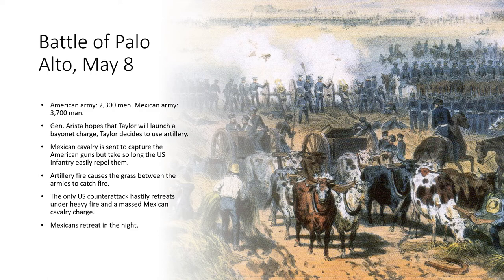The fire was so intense that the grass between the two armies caught fire. Only once during the battle did the U.S. regulars launch their own attack, but a combination of massed cavalry and extremely severe Mexican fire caused them immediately to break off, with some men seriously wounded. Night fell on the battle, and the Mexican forces, having suffered heavy losses, decided to retreat under the cover of darkness.